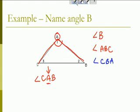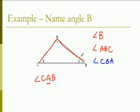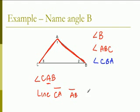So if we're looking at this, this is angle CAB. If we're looking at CAB, we have line CA is a side, and line AB is a side. And we have angle A.